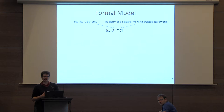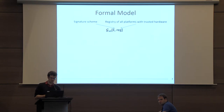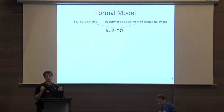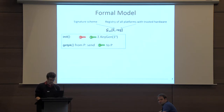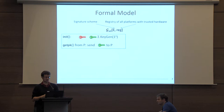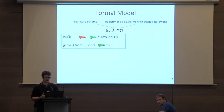Let me now dive into the actual formal model. We model attested execution as an ideal functionality in a UC-style framework. This functionality essentially will encompass all secure processors — all platforms from a given manufacturer — in a registry.